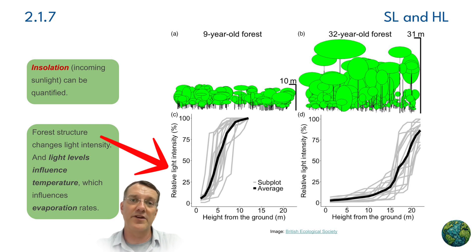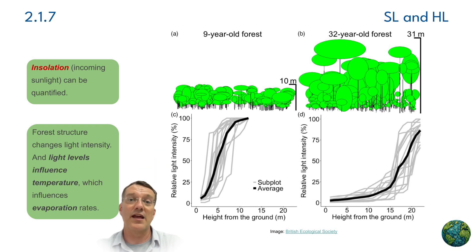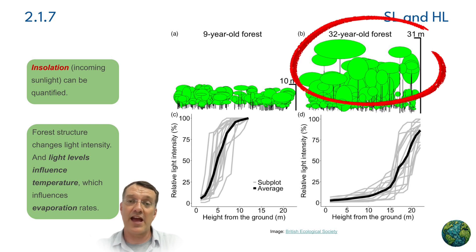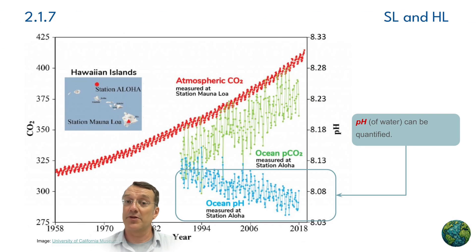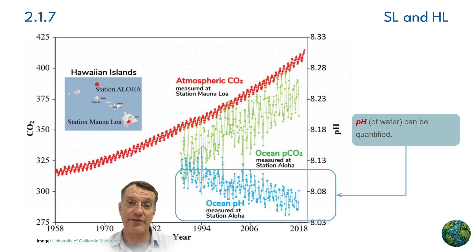you'll find very different abiotic factors than in a mature forest where the tree canopy has grown together, closing it off and making that ground level nice and shadowy, cool, and dark. pH levels, particularly in aquatic environments, also significantly impact species distribution and survival.